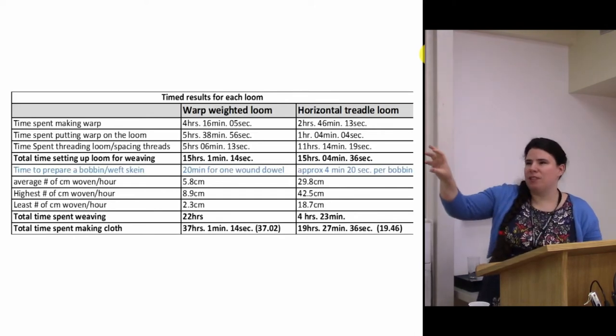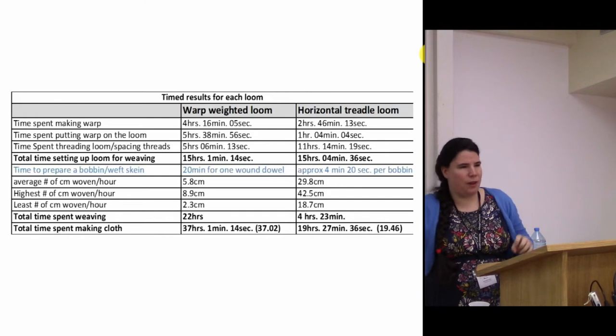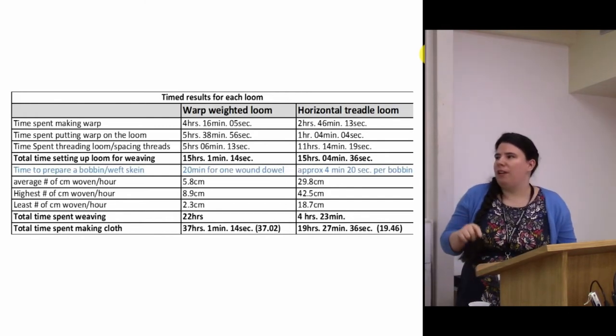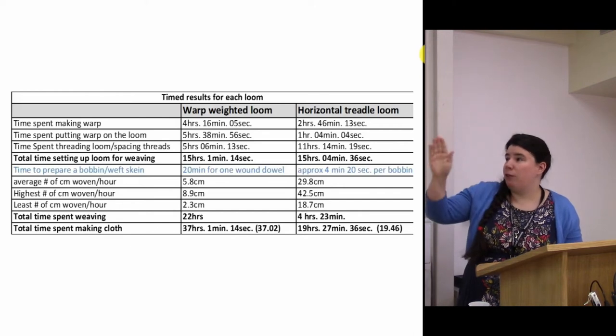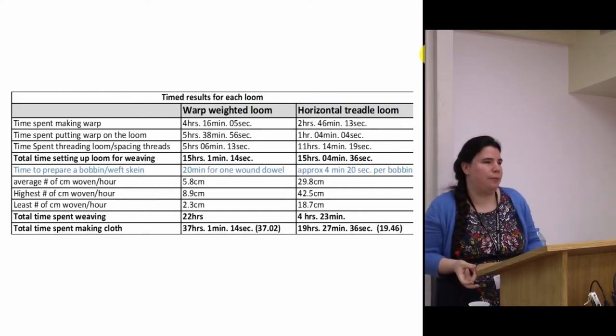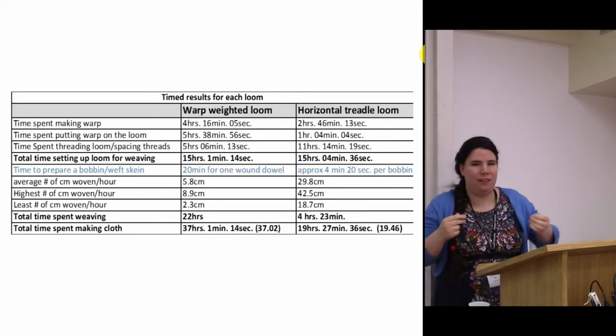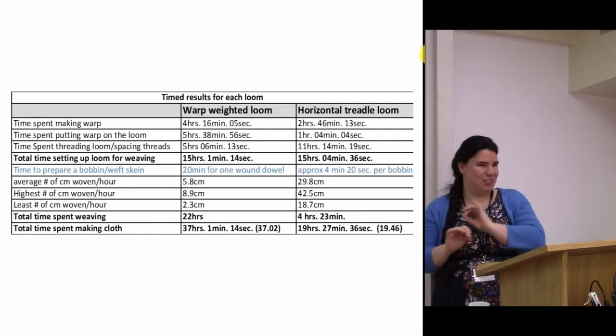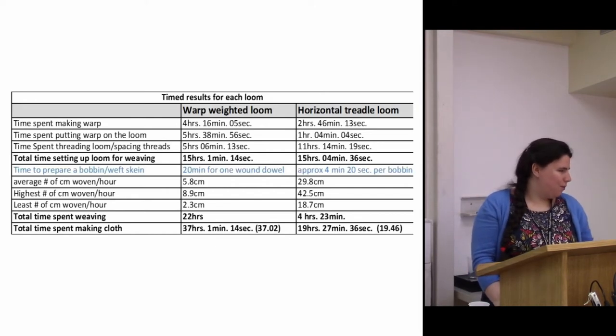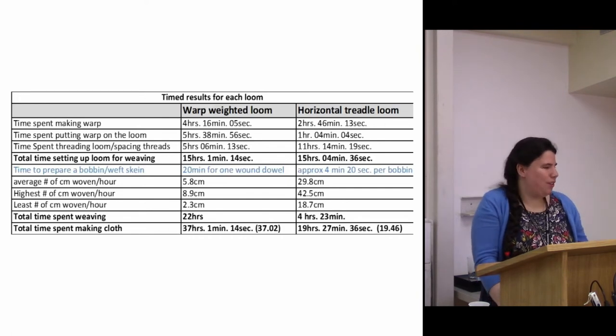The reason this is important is because I think that this represents what I would call invisible time in craft production. It doesn't matter if you take 4 minutes or 20 minutes to prepare that weft, that is not going to have a visual impact on the cloth. You cannot interpret how long someone took at specific stages like that. It's not really possible to interpret it just by looking at an object that's worth bearing in mind.